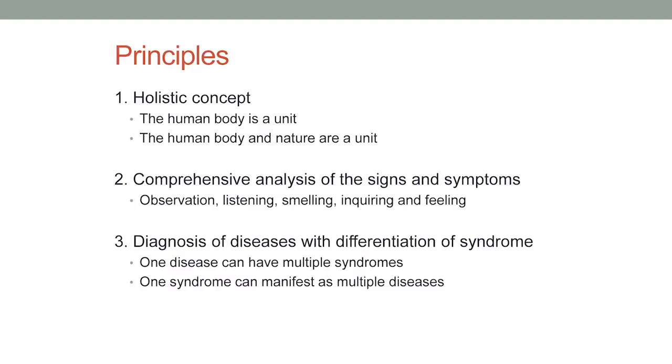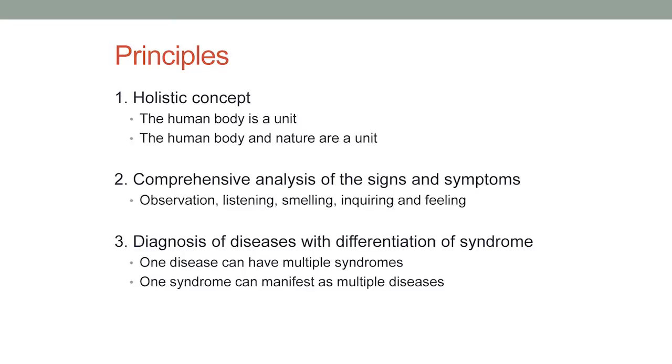Some major principles of Chinese medicine: the holistic concept holds that the body is one unit — you can't really break it down into specific systems. Beyond that, the body and nature are one unit; we can't be separated from our surroundings. Coming here from Seattle, for example, the symptoms I'm seeing are actually a little different because of the climate difference, which also affects treatment plans. The seasons, and where each individual resides, are all part of our makeup and a big part of Chinese medicine.